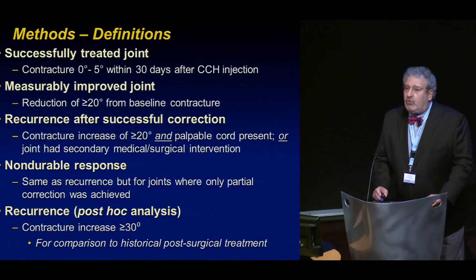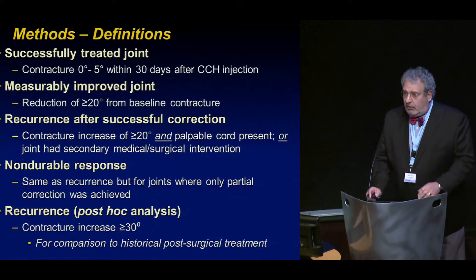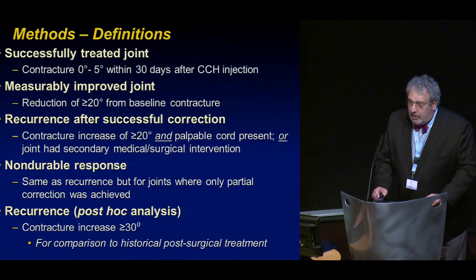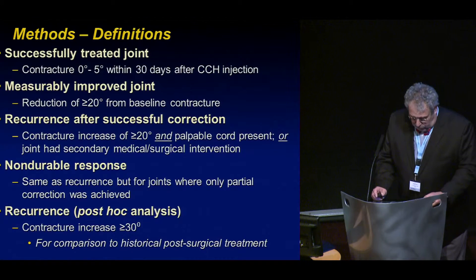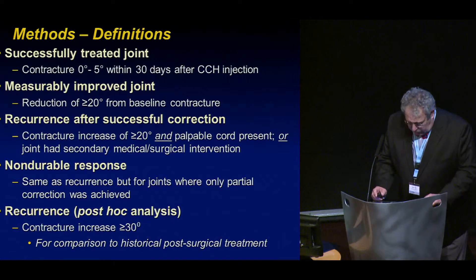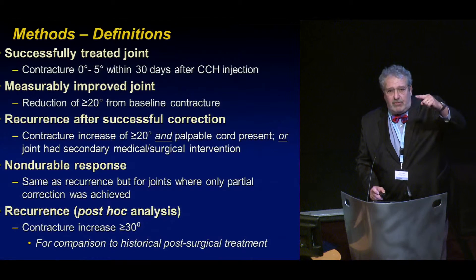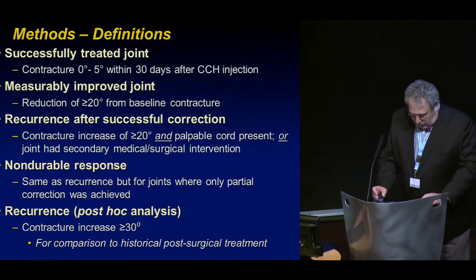A measurably improved joint is reduction of contracture by 20 degrees or more. Recurrence after successful correction is a contracture increase of 20 degrees or more and a palpable cord, or if the joint had any secondary intervention — medical or surgical treatment. So recurrence is those two things. A non-durable response is the same as recurrence, but it's for joints where only partial correction was achieved — in other words, a recurrence if you never get out fully straight.